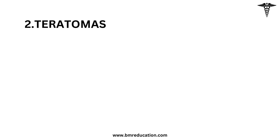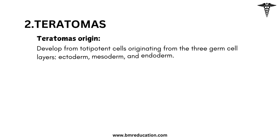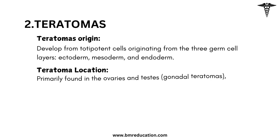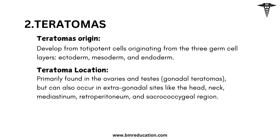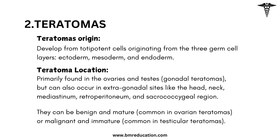Teratomas develop from totipotent cells originating from the three germ cell layers: ectoderm, mesoderm, and endoderm. Teratomas are primarily found in the ovaries and testes but can also occur in extragonadal sites like the head, neck, mediastinum, retroperitoneum, and sacrococcygeal region. They can be benign and mature, common in ovarian teratomas, or malignant and immature, common in testicular teratomas.